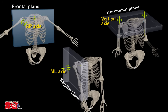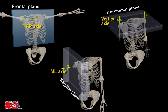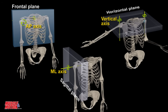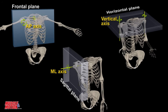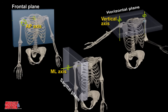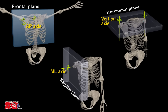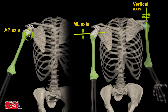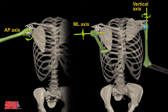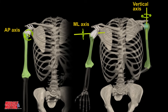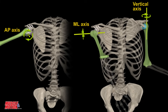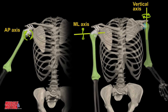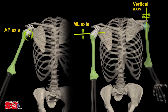Sagittal plane rotations occur about a medial-lateral axis. Frontal plane rotations occur about an anterior-posterior axis. Transverse plane rotations occur about a longitudinal axis.